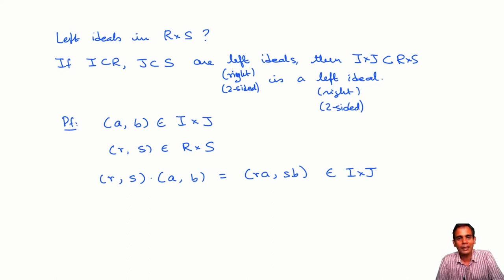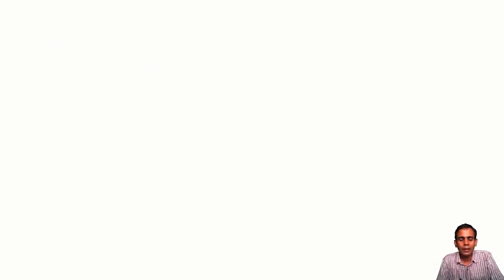And if I and J are two-sided ideals in R and S respectively, then I×J is a two-sided ideal in R×S. It turns out that every left ideal of R×S is of the form I×J, where I is a left ideal of R and J is a left ideal of S.